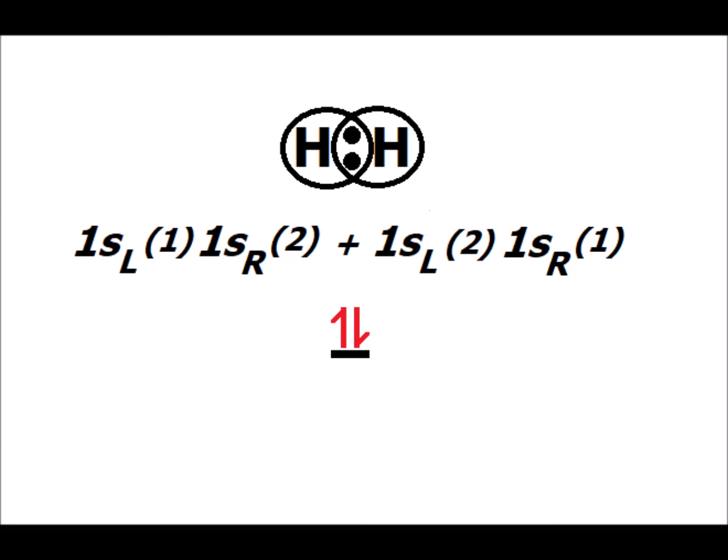We see we get the linear combination in the middle: we can have the first electron in 1sL and the second electron in 1sR, or we can have the opposite convention where the second electron is in the left atomic orbital and the first electron is in the right atomic orbital.